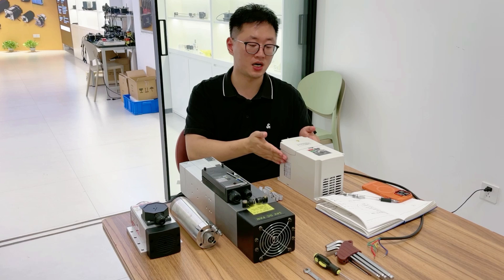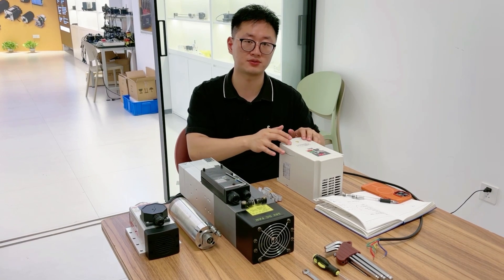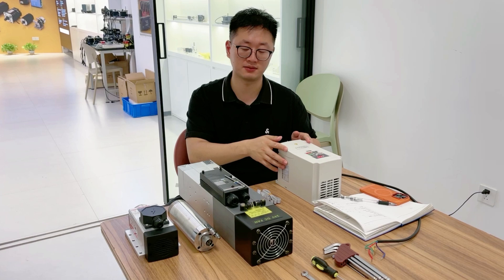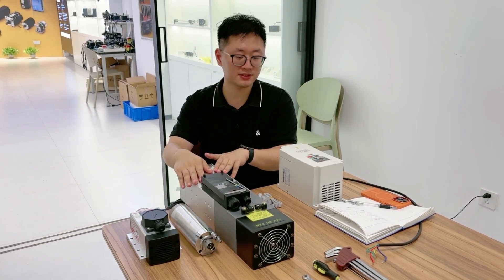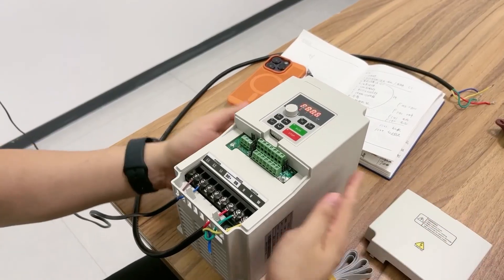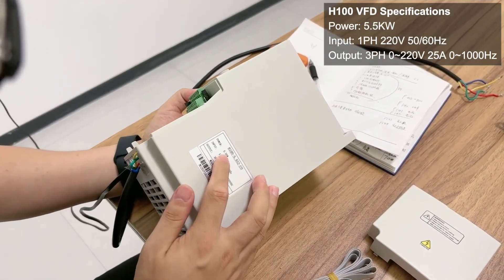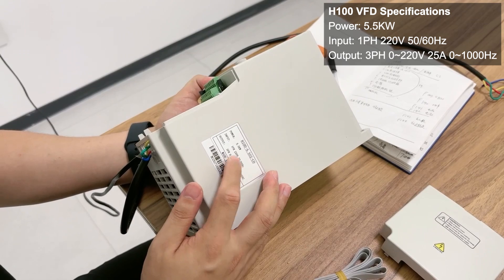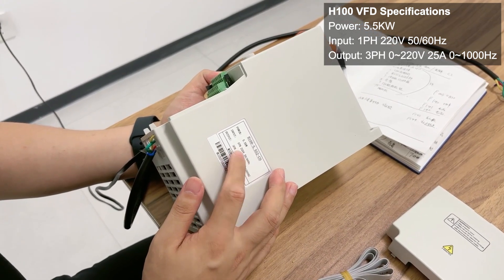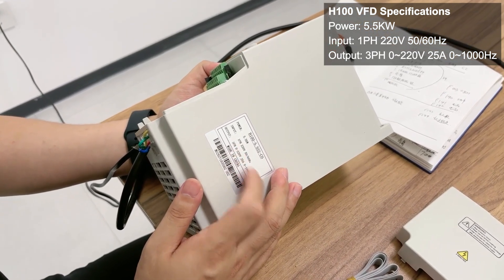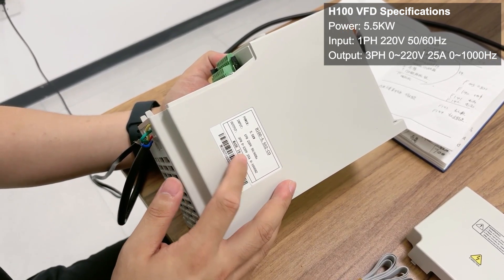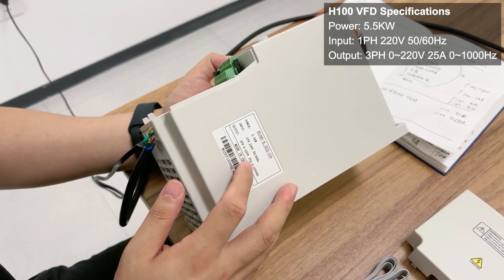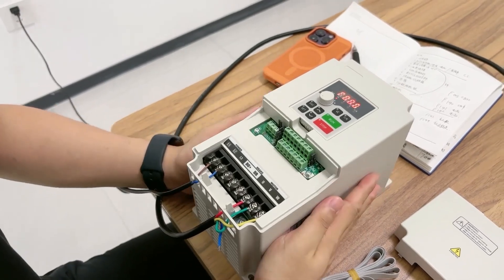Today I will teach you how to set the H100 parameters. Many parameters need to be set before running the spindle. First, come here. As you can see, this is the H100 VFD. This is a 5.5 kilowatt, single phase, 220 voltage unit. The output frequency is 0 to 1000 Hz. The current is 25A. And here are some main connectors we need to take seriously.